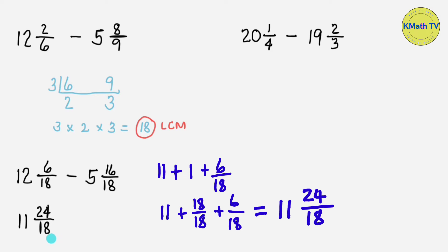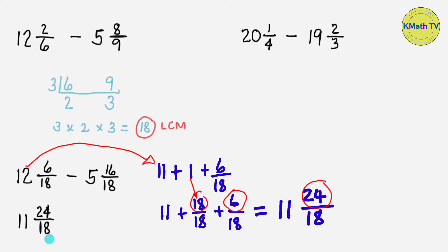Here is the step-by-step solution when you regroup. We take 1 from the whole number and change it to a fraction equal to 1 where the denominator is the same as the denominators of the minuend and subtrahend, then add them together. The numerators are 18 and 6, and their sum is 24. That's why in the trick I just add the numerator and the denominator — because a fraction equal to 1 has the same numerator and denominator, and I add that fraction in my mind. That's the reason behind the trick.